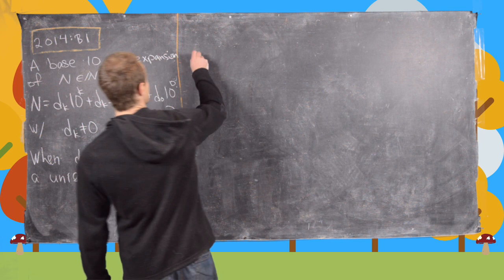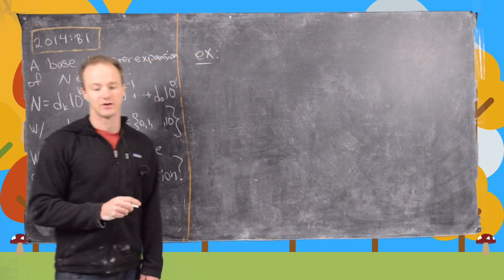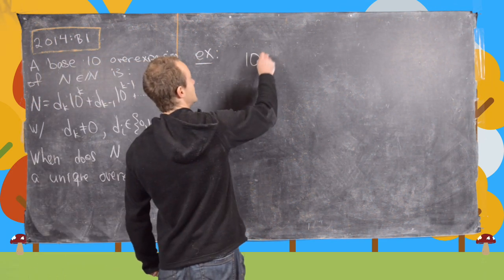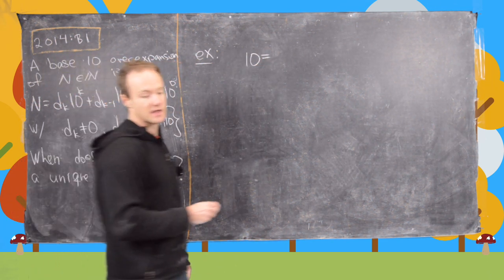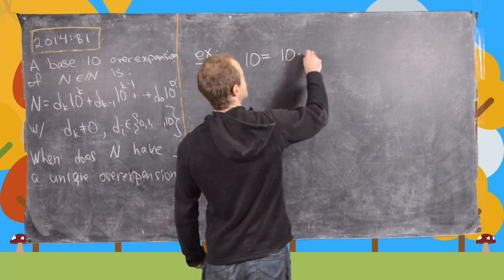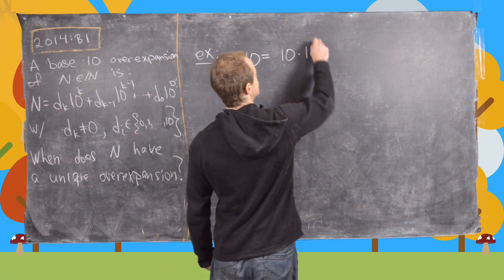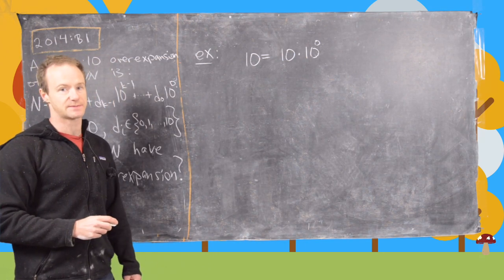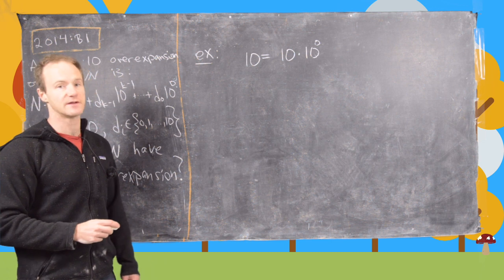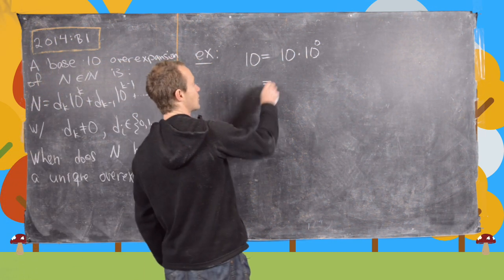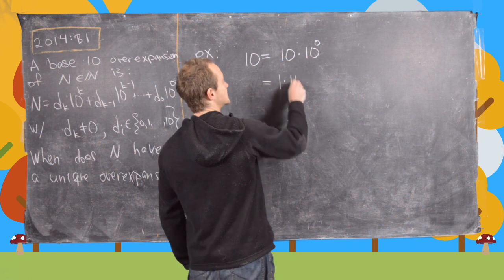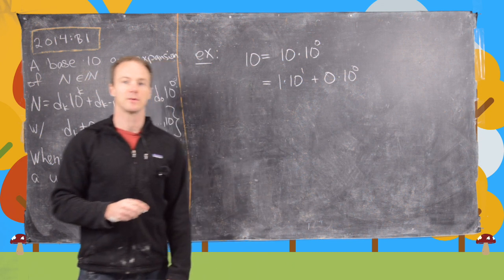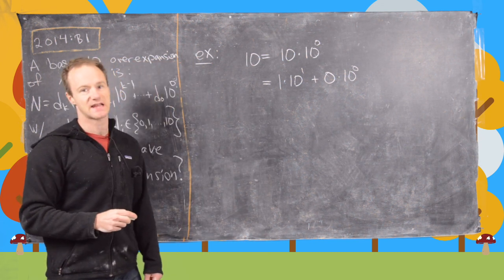Let's look at some examples when it does not have a unique over-expansion first. Notice that 10 can be written in two ways: it can be written as 10 times 10 to the 0, which is not allowed as a standard base 10 expansion but is allowed as one of these over-expansions. Another way we could write it would be 1 times 10 to the 1 plus 0 times 10 to the 0, which is the standard base 10 expansion.